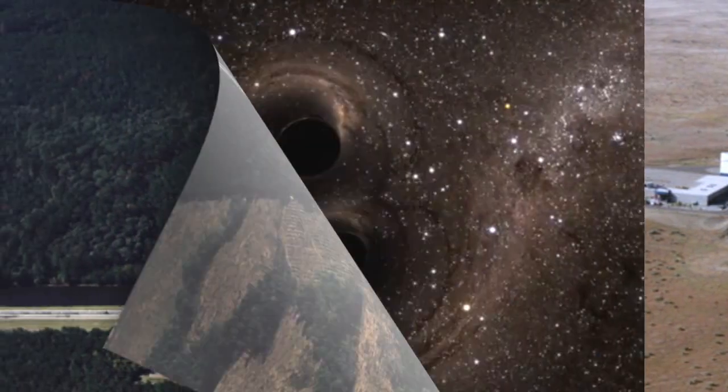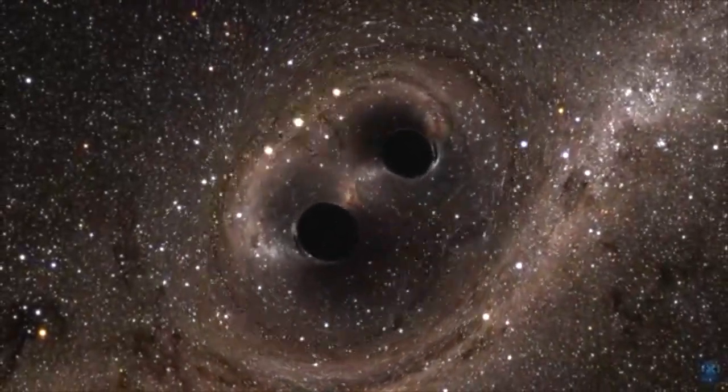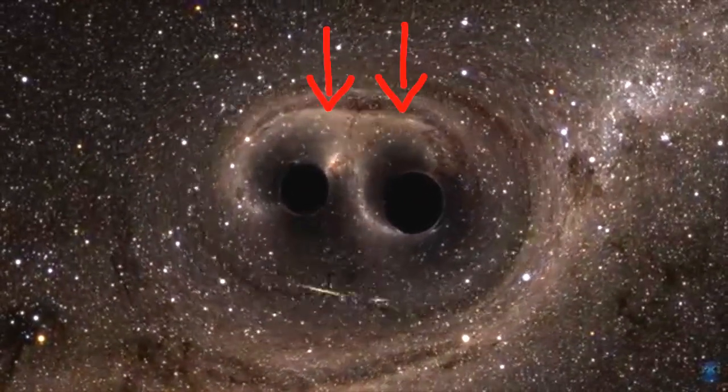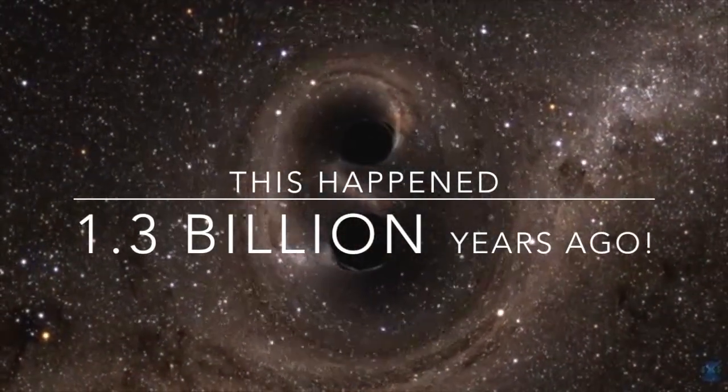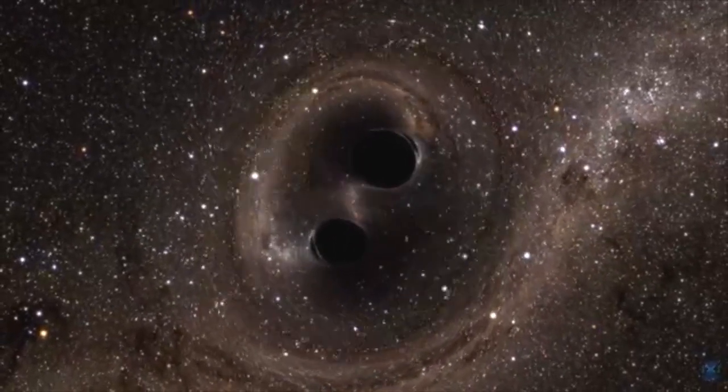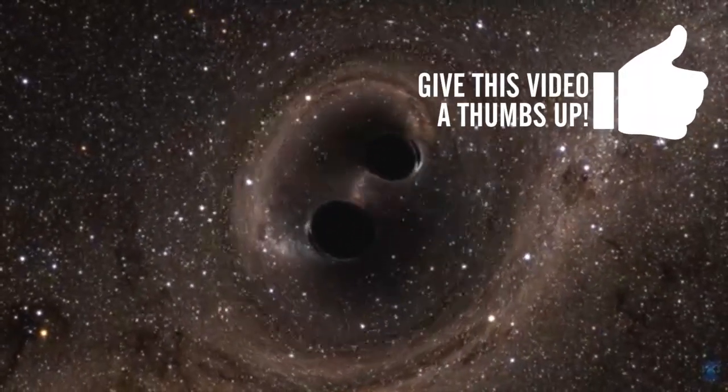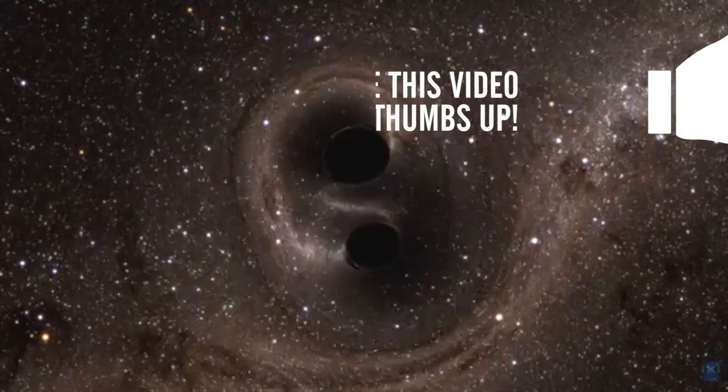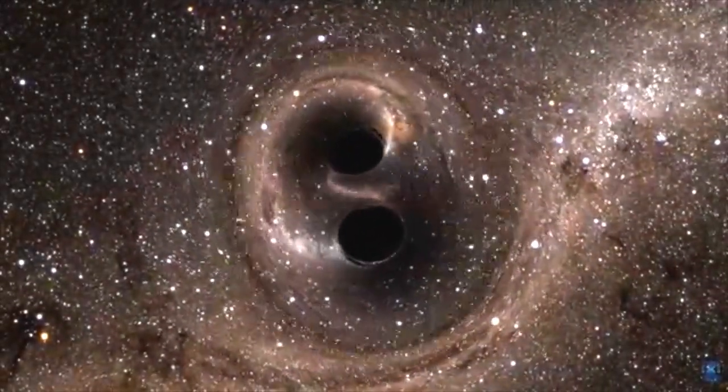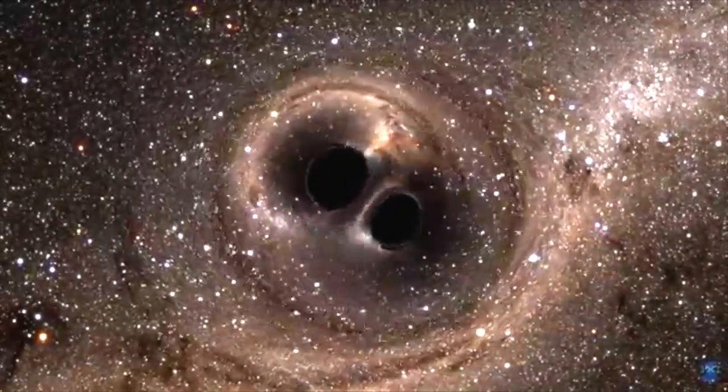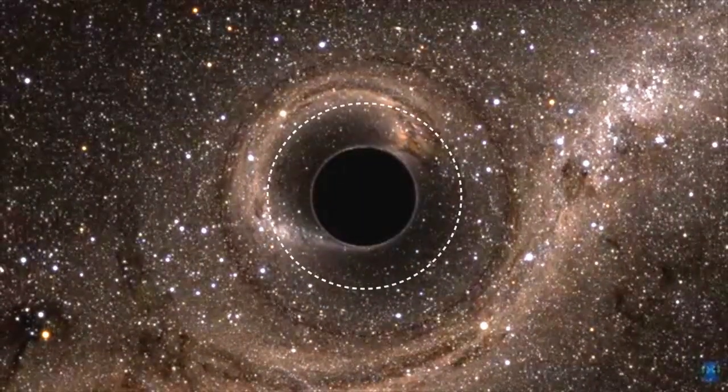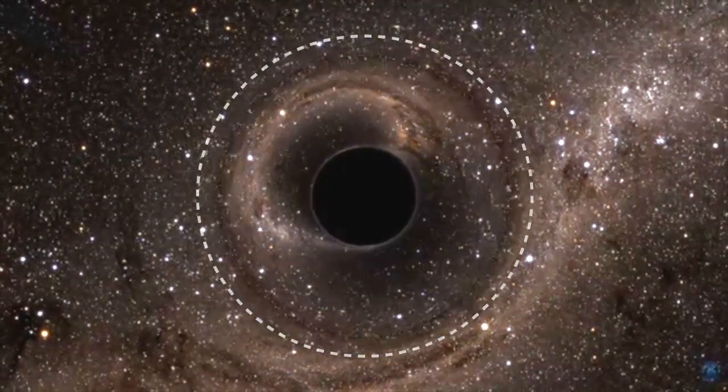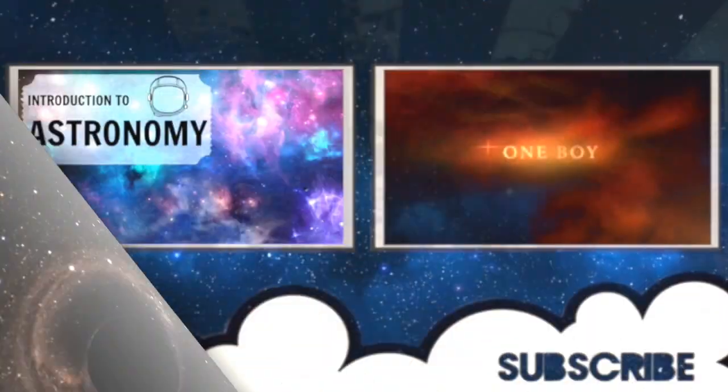The gravitational waves that we detected were generated by two medium-sized black holes 1.3 billion years ago. Just let that sink in. The gravitational waves that we picked up were produced 1.3 billion years ago. These black holes were orbiting each other and then eventually they merged together producing gravitational waves which travelled at the speed of light to then hit Earth.